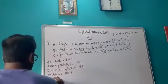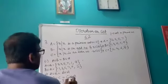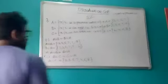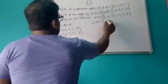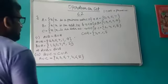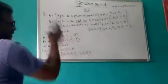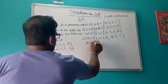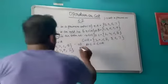Next, prove A union C = C union A. A union C: elements of A = {2, 3, 5, 7}, then elements of C not in A: 4, 6, 8. C union A: elements of C = {2, 4, 6, 8}, then elements of A not in C: 3, 5, 7. Both sets contain the same elements — {2, 3, 4, 5, 6, 7, 8} — so A union C = C union A.